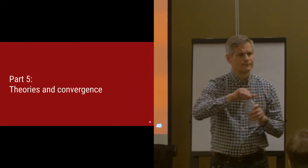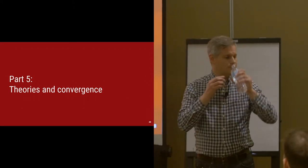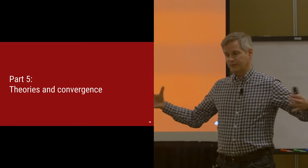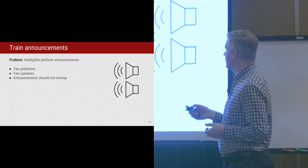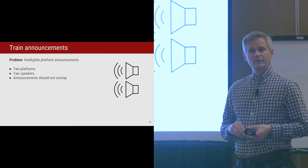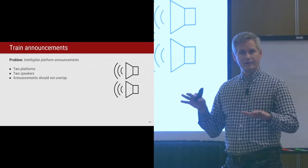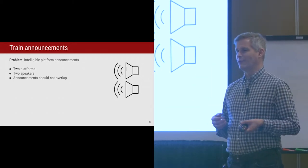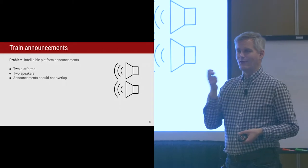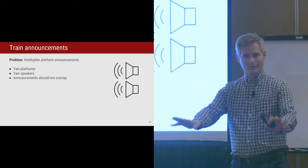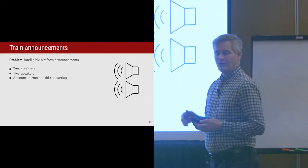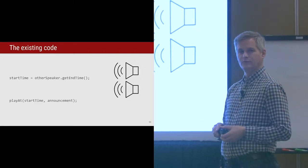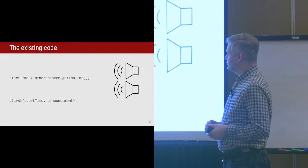Last section: theories and convergence. Here's an example of something you might be asked to do. There's a platform with trains or an airport, and you've got loudspeakers that make announcements. You guys have probably been at the airport where two adjacent gates both announce the flight at the same time and you can't hear either. We're going to write a program to solve that. What we want is announcements that don't overlap with each other.